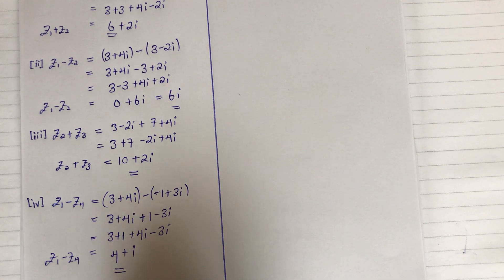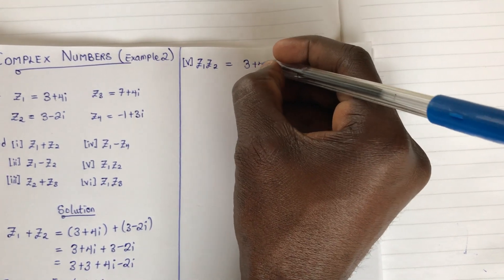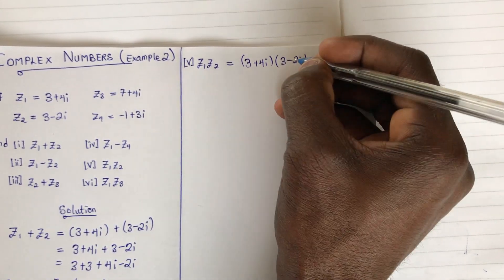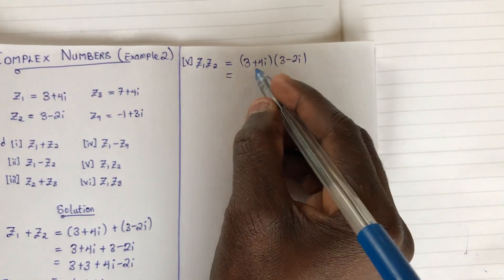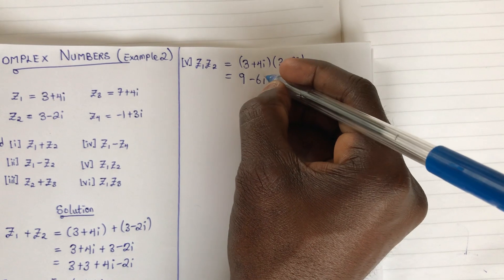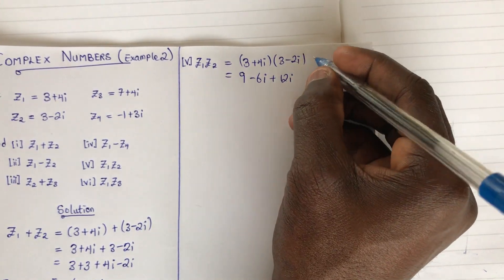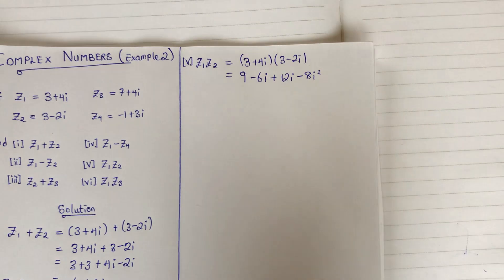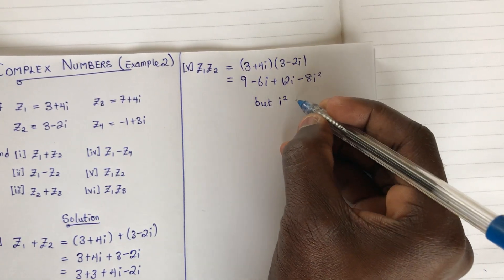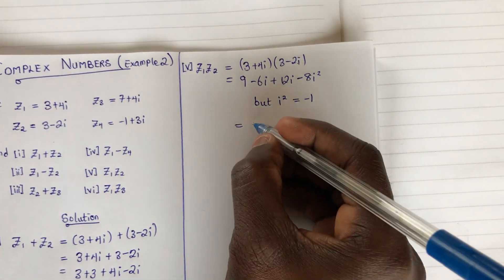For the fifth example, z1 times z2: we have 3 plus 4i multiplying 3 minus 2i. We use the whole bracket to multiply. 3 times 3 gives 9, 3 times negative 2i gives minus 6i, 4i times 3 gives plus 12i, and 4i times negative 2i gives minus 8i squared. Note that i times i gives i squared.